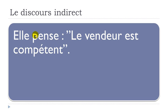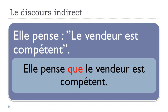Penser means 'to think' — she thinks the seller is competent. If you want to combine these two sentences into one, you modify it — that's what we call the discours indirect. You get 'Elle pense que le vendeur est compétent.' So she thinks that the seller is competent.